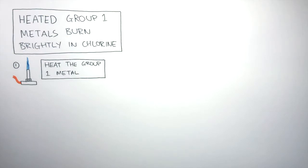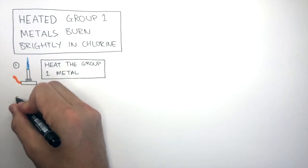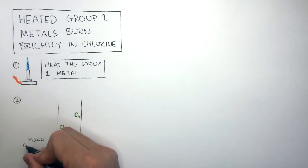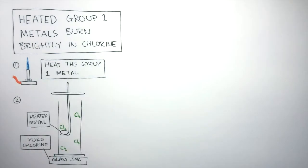Without this energy, the reaction will not start. The next stage, you need a glass jar full of chlorine gas. This glass jar is full of pure chlorine gas. So when the heated metal is placed inside the pure chlorine, it will burn brightly.